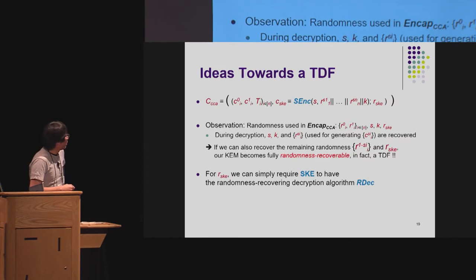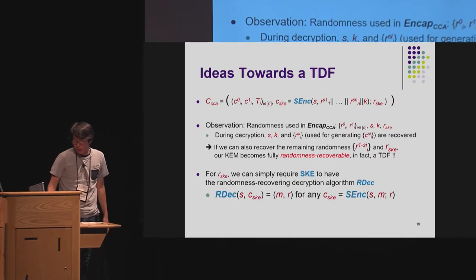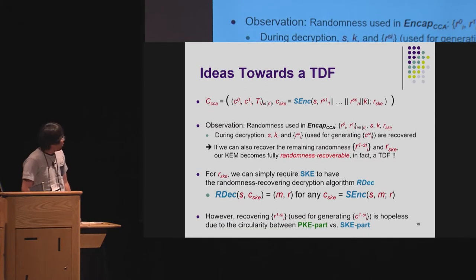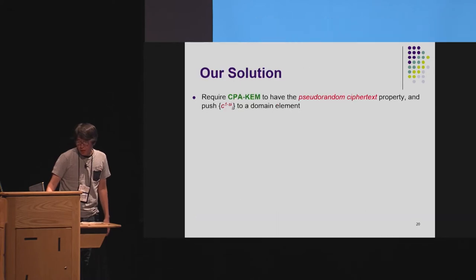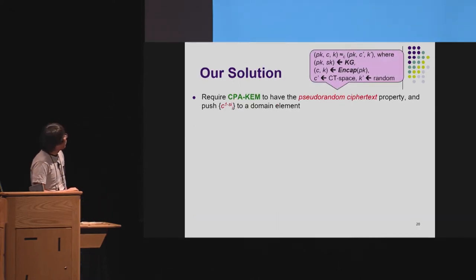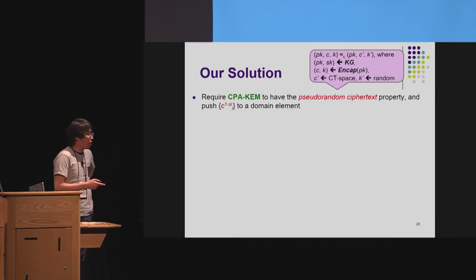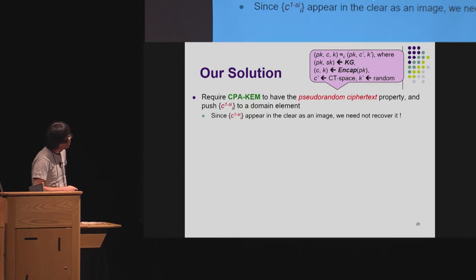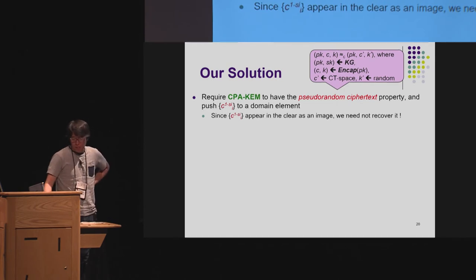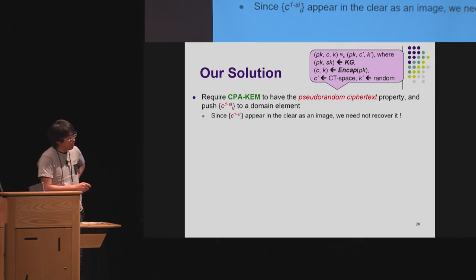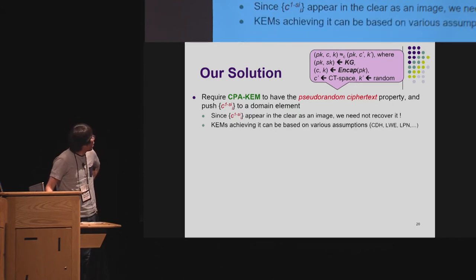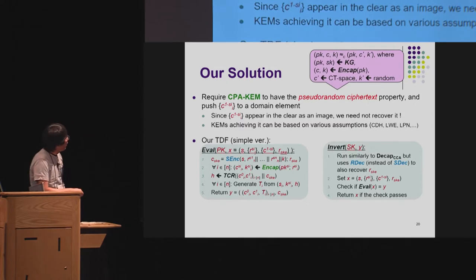For the SKE part, we can simply require the randomness-recovering property, and we already have such schemes from standard assumptions. However, recovering the remaining values is hopeless due to circularity between the SKE and PKE parts. So we require the CPA KEM to have the pseudorandom ciphertext property and push these values into the domain element of the trapdoor function. Since they then appear in the image in the clear, we need not recover them. KEMs achieving this property are also achievable from standard assumptions. Our trapdoor function construction is essentially based on our CCA-secure KEM, where some elements come from the domain. In the inversion, we use the randomness-recovering decryption for the SKE, and finally perform the validity check.